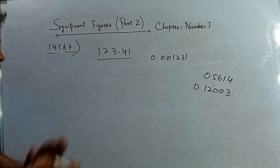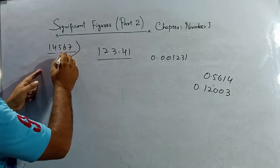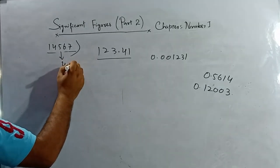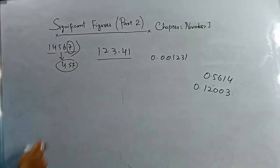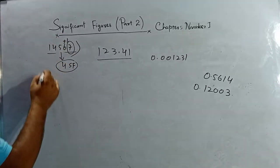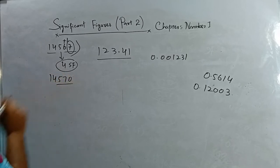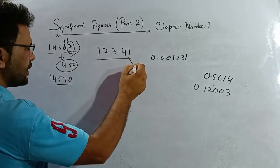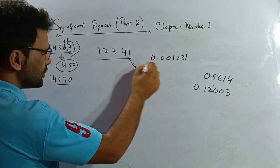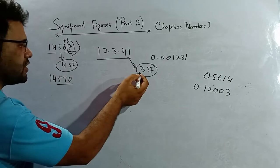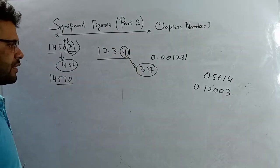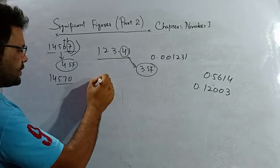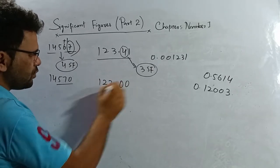If the question says write this number correct to four significant figures, I check the fifth one. If it is greater than five I add one — yes, it is greater than five, so the answer is 14570. If the question says write correct to three SF, I check the fourth significant figure. It is not greater than or equal to five, so the answer is 123.